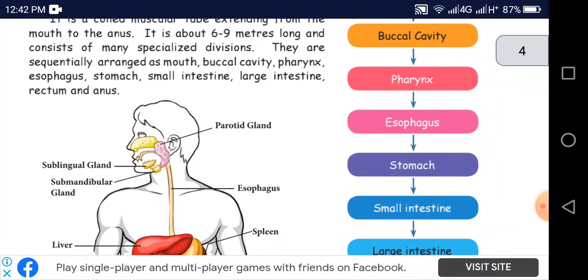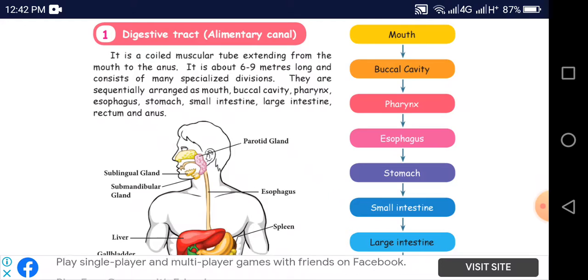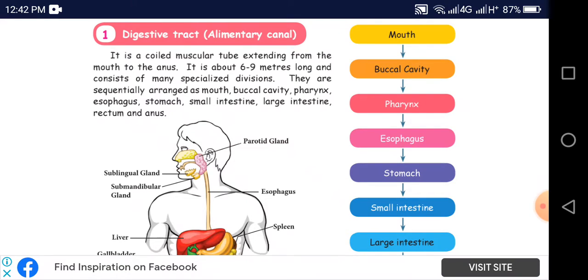You can see the picture. It is a coiled muscular tube extended from stomach to anus. It is about 6 to 9 meter long and consists of many specialist divisions.